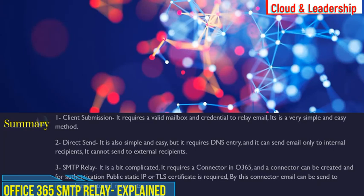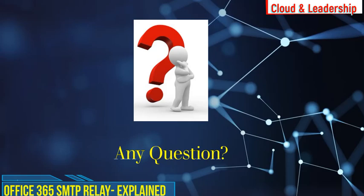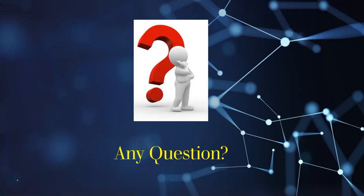Number three, SMTP relay is a bit more complicated — it requires a connector in O365, which can be created for authentication using a public IP or TLS certificate. With this connector, email can be sent to both internal and external recipients. Please like this video, subscribe to the channel, and press the bell icon for more upcoming videos. If you have any questions about SMTP relay, leave a comment and we'll try to answer. Thanks for watching — see you in the next video.